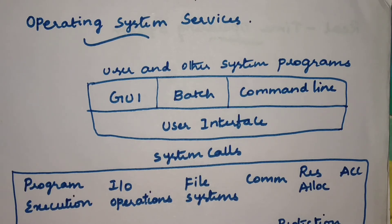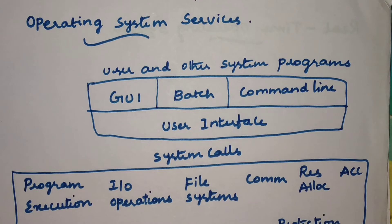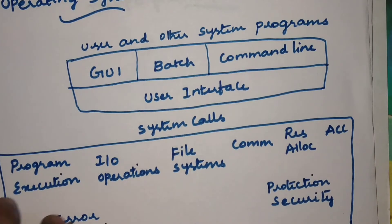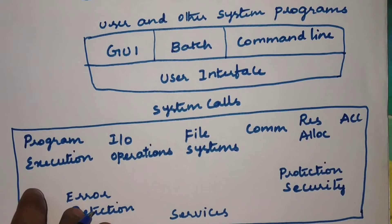The second view is how the operating system actually interacts with the user — many user applications may run in the system, so how is the operating system providing the interface for the user and also between the software and hardware. The third view is how the components have been connected internally. We are going to discuss these three aspects of the operating system one by one, starting with what services the operating system provides.